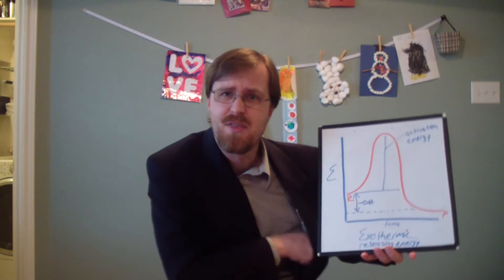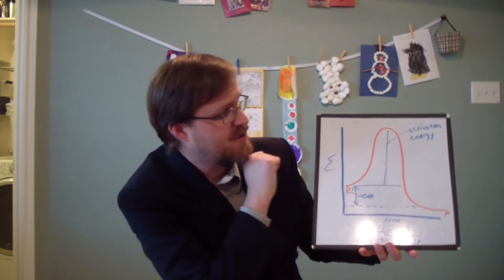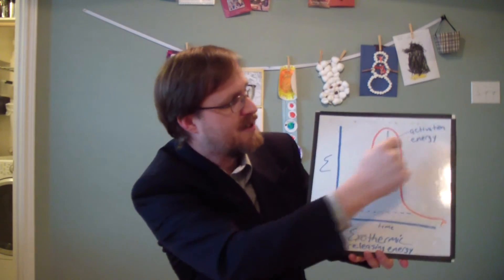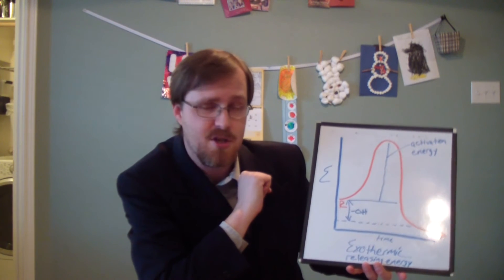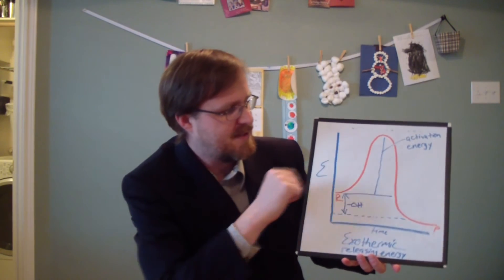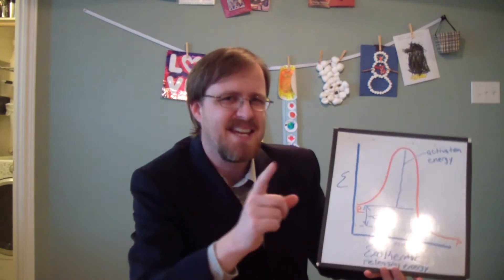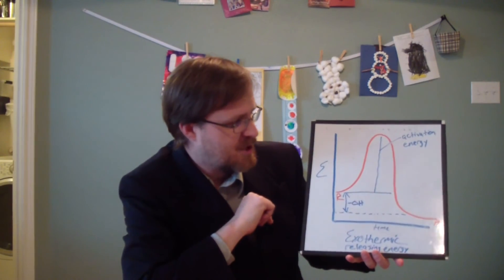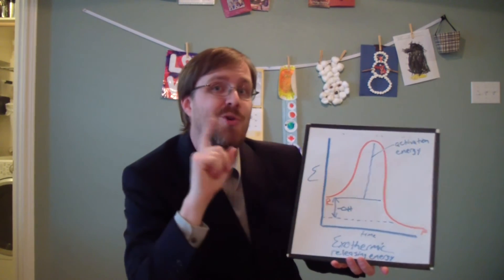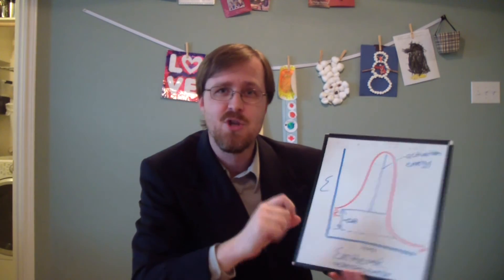But what about the opposite of endothermic, which is exothermic? Same thing — we have the reactants on the left, the products on the right, and once again we have the large activation energy that must be absorbed before the reaction can continue. But the main difference, as you can clearly see, is that the products are much lower than the reactants, giving us a negative delta H. Remember, a negative change in enthalpy means it is releasing energy.